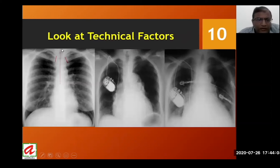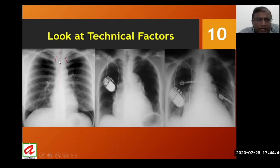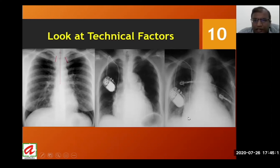Regarding technical factors: when interpreting the chest PA radiograph, always check the equidistance between the spinous processes of the spine and the medial ends of the clavicles. A gap of more than one centimeter is acceptable; otherwise, the patient is considered rotated. If the medial end of the left clavicle is away from the spine, it is left-sided rotation; if the right clavicle's medial end is away from the spinous process, it is right-sided rotation. With right-sided rotation, the heart appears smaller than actual size; with left-sided rotation, it appears larger — making rotation assessment critical for accurate cardiac evaluation.